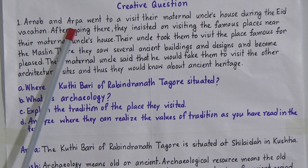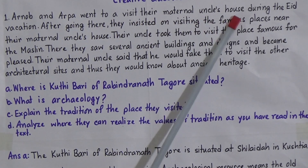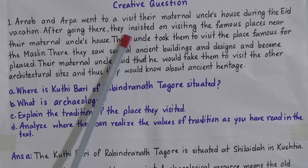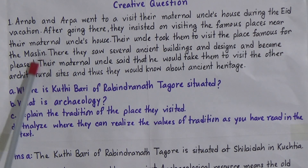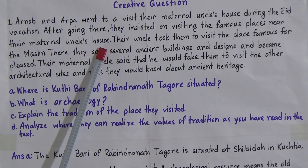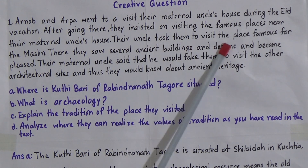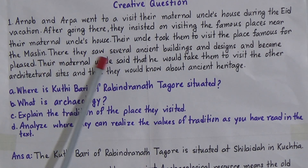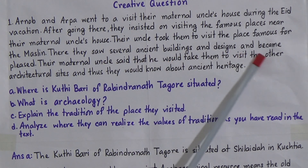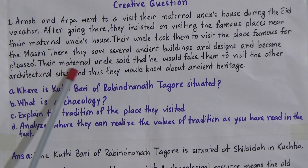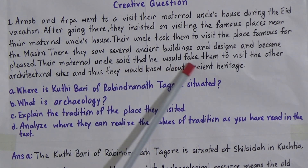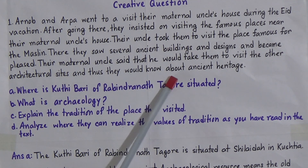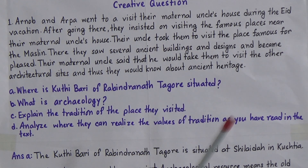Anub and Orpa went to visit their maternal uncle's house during the eve vacation. After going there, they insisted on visiting the famous places near their maternal uncle's house. Their uncle took them to visit the place famous for the muslin sari. There they saw several ancient buildings and designs and became pleased. Their maternal uncle said that he would take them to visit other architectural sites so they would know about ancient heritage.